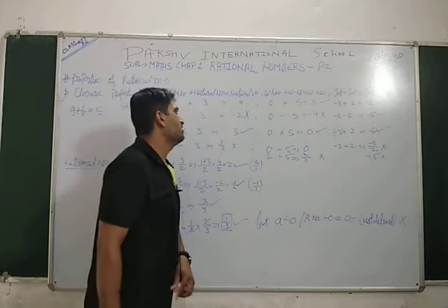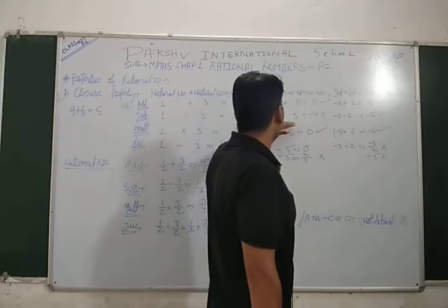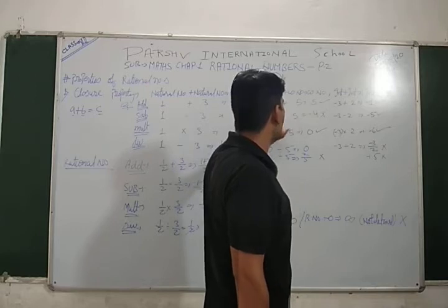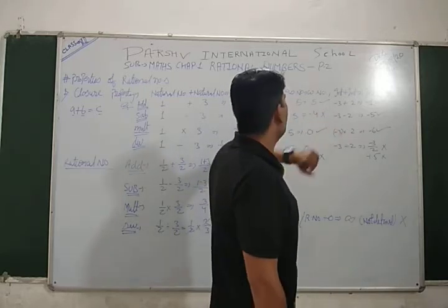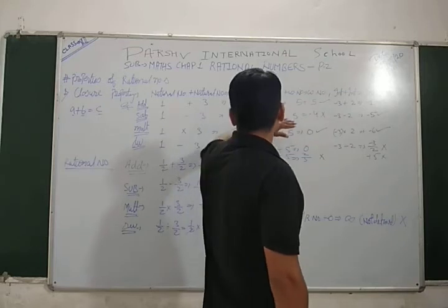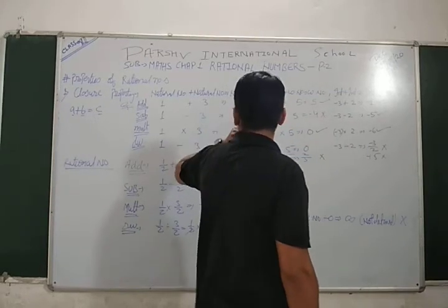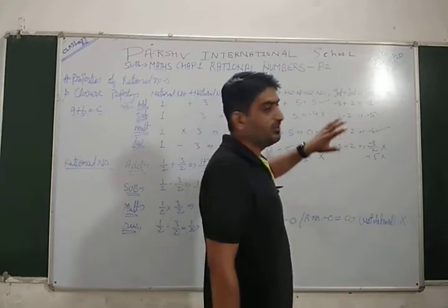Using natural number means 0 minus 5, as a whole number, all numbers are not closed under subtraction, which is not a whole number.